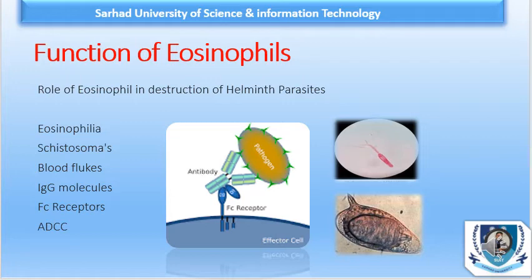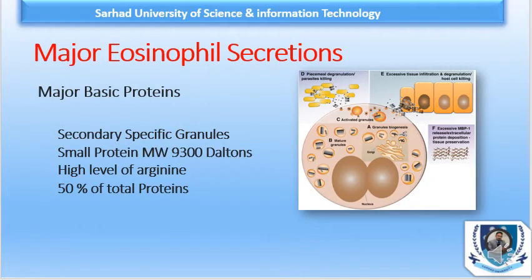After summarizing these points, we move toward the secretory granules of eosinophil, which have the most important role in killing parasites. The major eosinophilic secretions are: MBP (Major Basic Protein), Charcot-Leyden Crystals (CLC), Eosinophil Peroxidase, Eosinophilic Cationic Protein, and Eosinophil-Derived Neurotoxin.